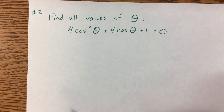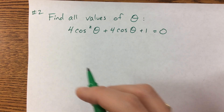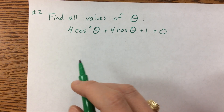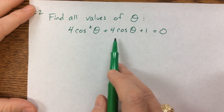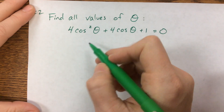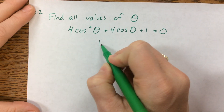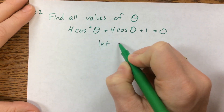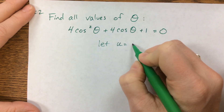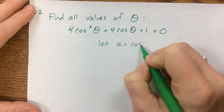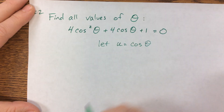Our second example — when they say find all values of theta, we're doing trig equations. When I see this, this is one of those where it might be helpful to let u equal something. So I can say, well, let u equal cosine of theta.